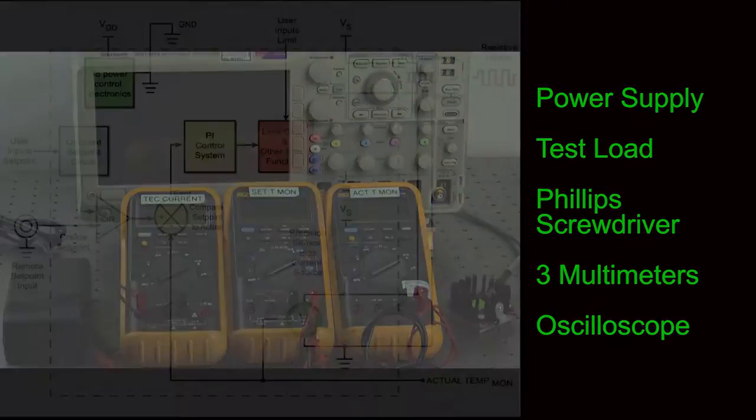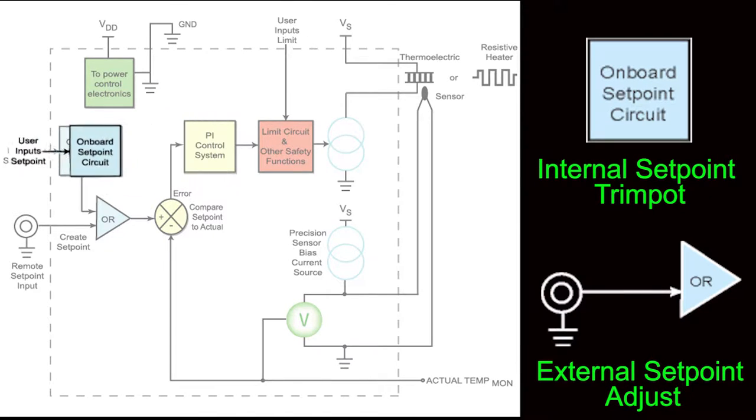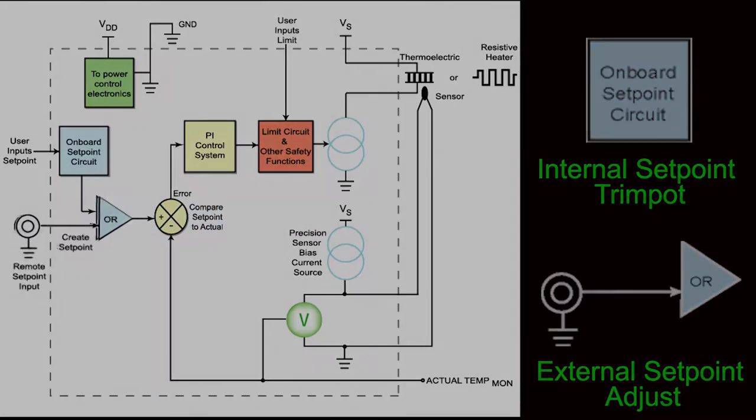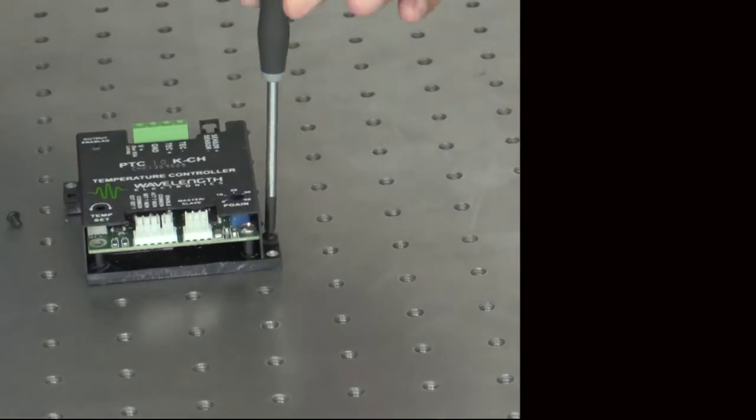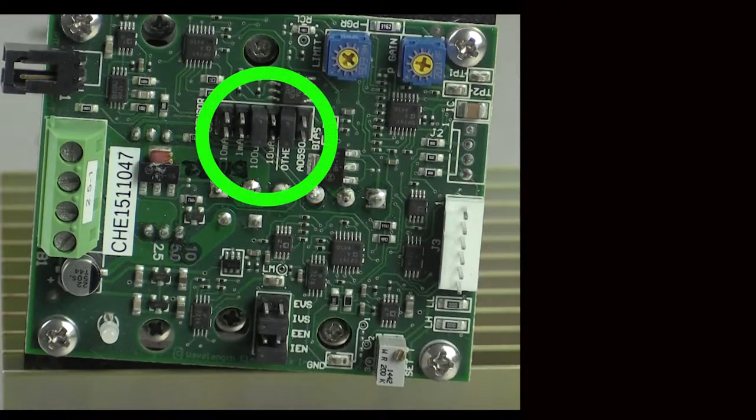The setpoint voltage can be generated by the PTC using the onboard potentiometer or by a remote voltage. Before wiring up the PTC, two internal jumpers need to be set properly. Remove the cover, two corner screws, and locate the jumpers. One set is for sensor and bias current selection.